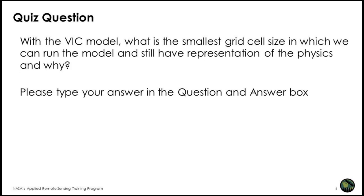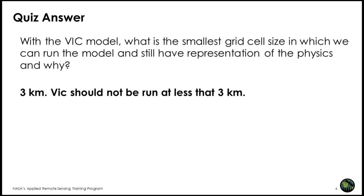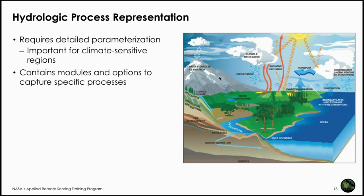A quick question for the audience: with the VIC model, what is the smallest grid cell size we can theoretically run the model at while still representing the physics, and why? Now that we have covered VIC's features, we will dive deeper into the physical representations of the hydrologic processes the model captures. The model requires detailed parameterizations, which are especially important for climate-sensitive regions, and VIC contains specific modules and options to capture those processes.